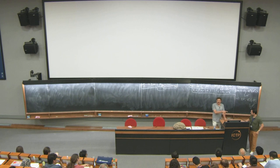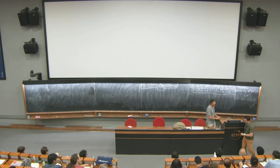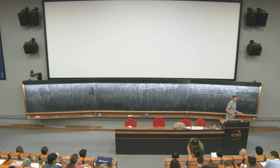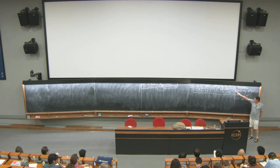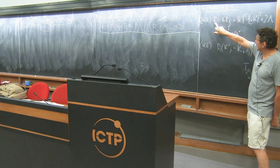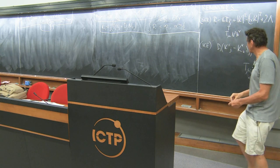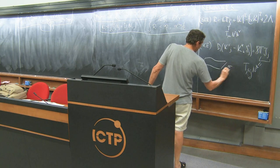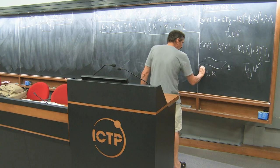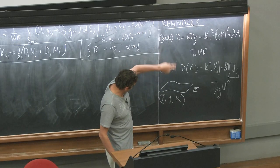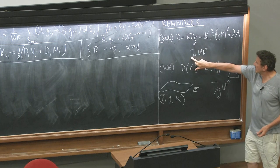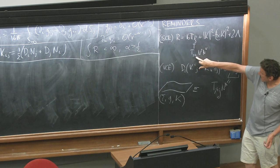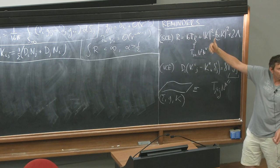Let me remind you where we ended yesterday. There is the scalar constraint equation, which states that the Ricci scalar of a Riemannian metric — we're looking at initial data — equals 16πρ, where ρ is defined through the energy-momentum tensor in this way.